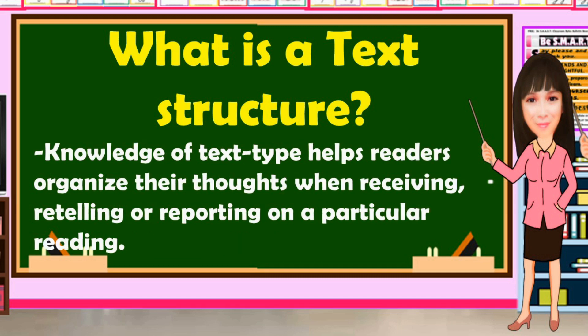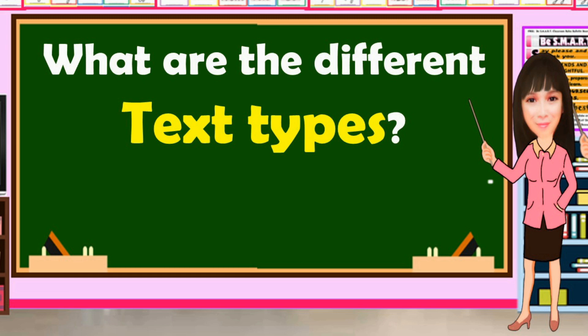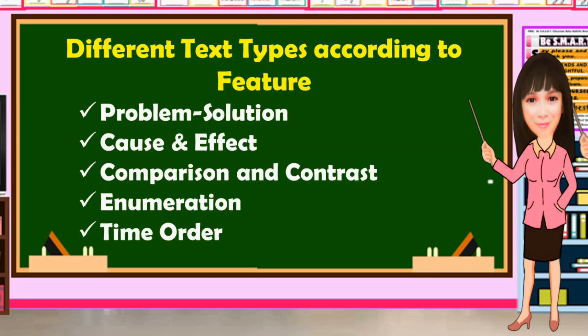Knowledge of text type helps readers organize their thoughts when receiving, retelling, or reporting on a particular reading. Reading text type requires a deep understanding and critical comprehension. That's why it is important to classify or identify the structure and language feature of the different text types. This will help a lot in understanding the text being read. Here are the different text types according to feature: problem-solution, cause and effect, comparison and contrast, enumeration, and time order.